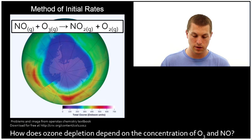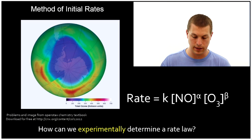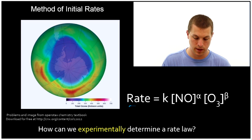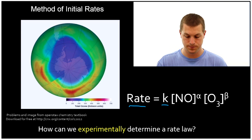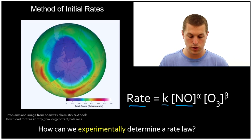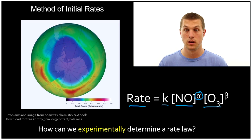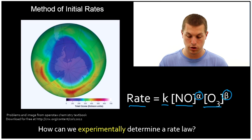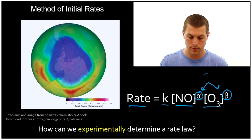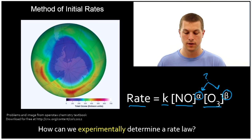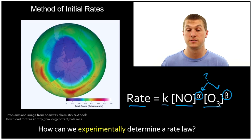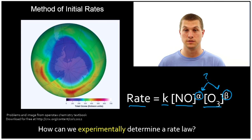We can write down the generic rate law: the rate of our chemical reaction is equal to K, the rate constant, times [NO], the concentration of nitrogen monoxide, to some unknown constant alpha, times the concentration of ozone to some unknown power beta. We don't know these exponents — that's what we're trying to figure out. Maybe it depends on the first power, second power, or even the zero power — maybe it doesn't depend on those concentrations at all.